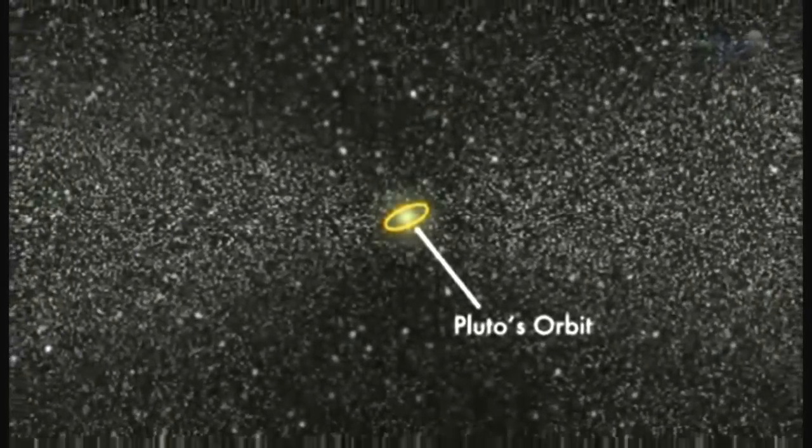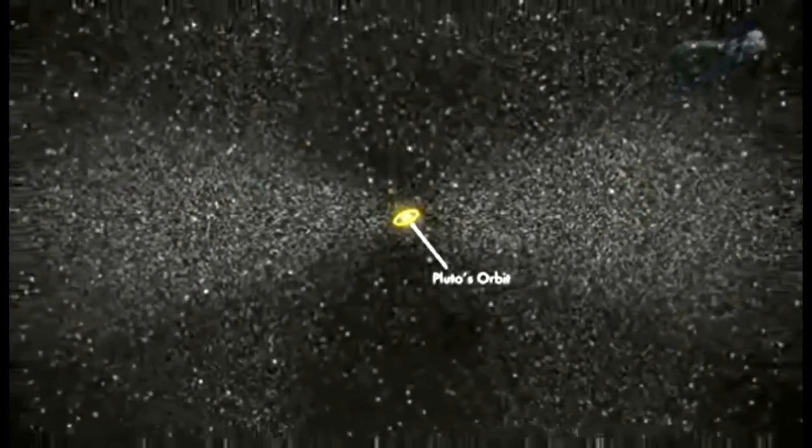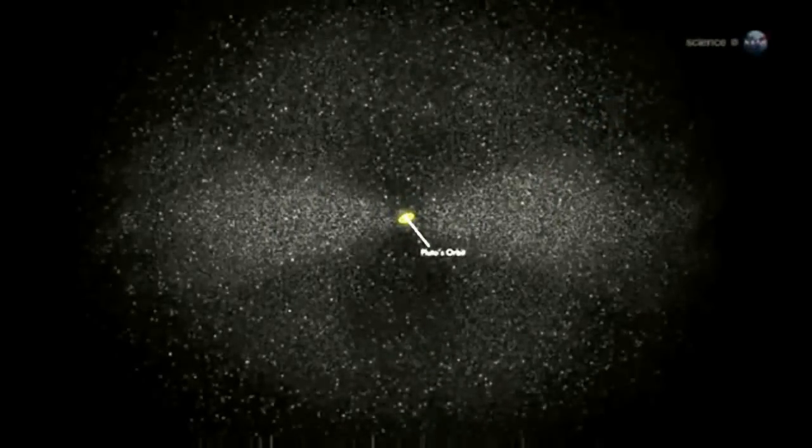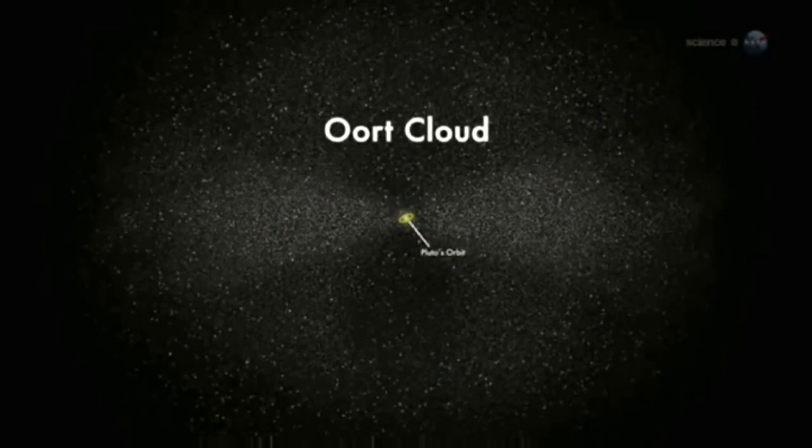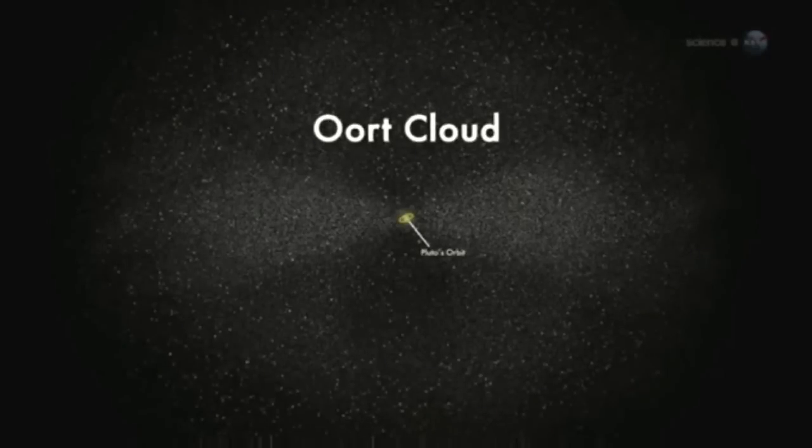Far beyond the orbits of Neptune and Pluto, where the Sun is a pinprick of light not much brighter than other stars, a vast swarm of icy bodies circles the solar system. Astronomers call it the Oort Cloud, and it is the source of some of history's finest comets.